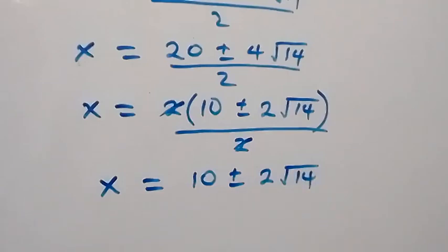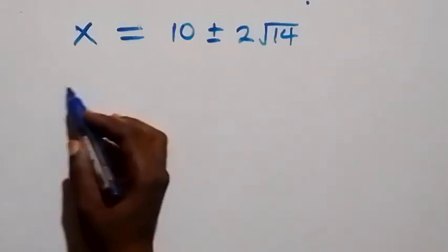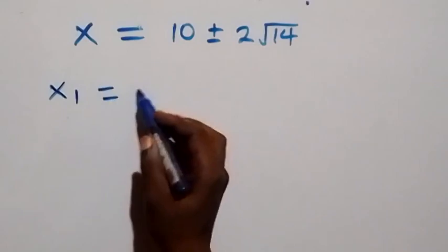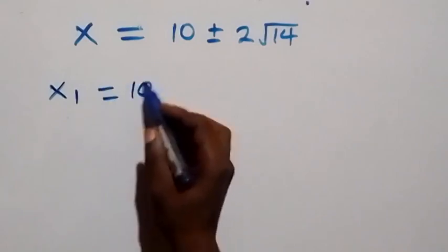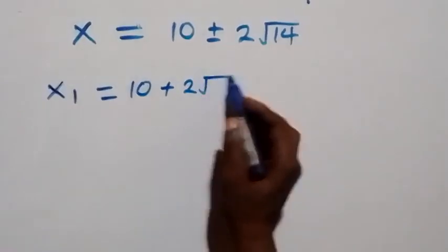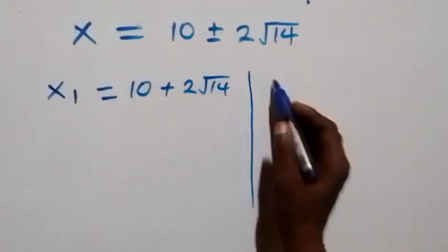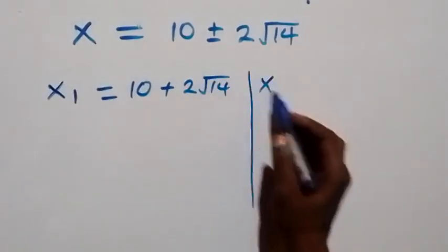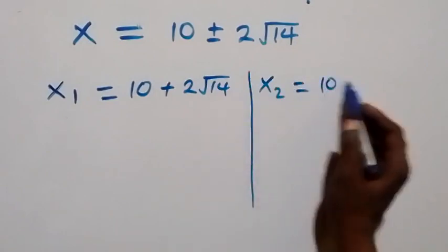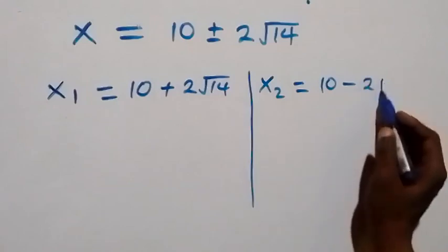From here we have two values of x: x₁ equals to 10 plus 2 root 14, and x₂ equals to 10 minus 2 root 14.